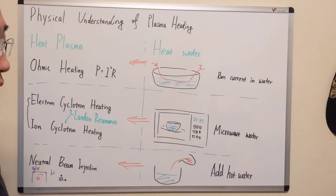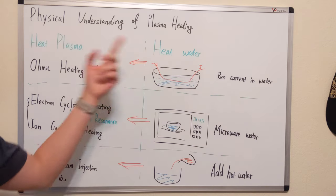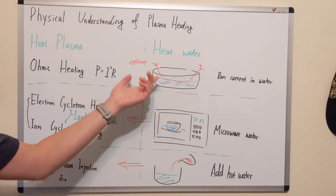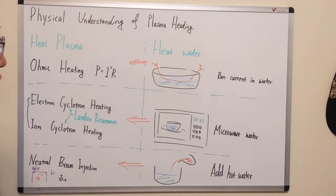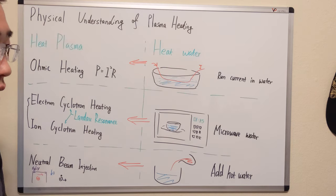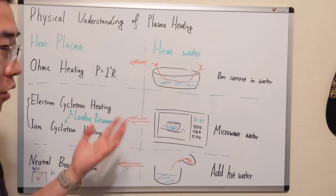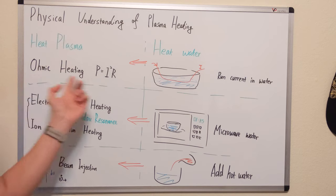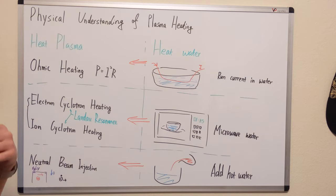Back to the heating water analogy — which is really simple and nice to understand. If you want to heat a ton of water, one way, even if it's not safe, is to run a current through the water. Assuming the water isn't pure H2O, the impurities will cause resistive heating.